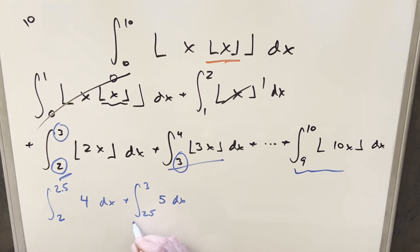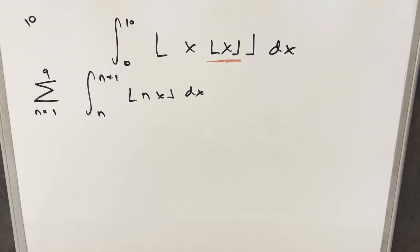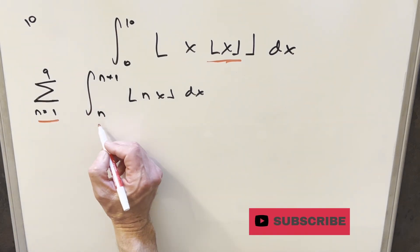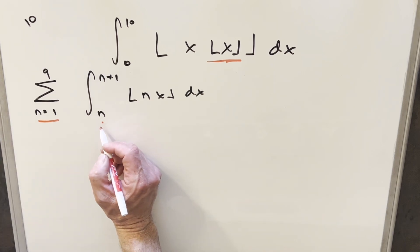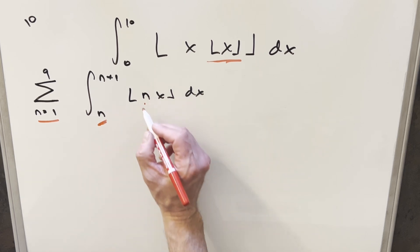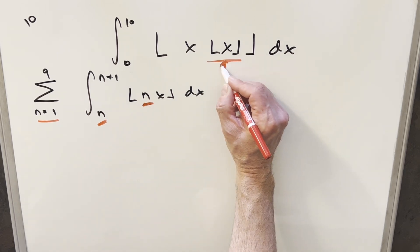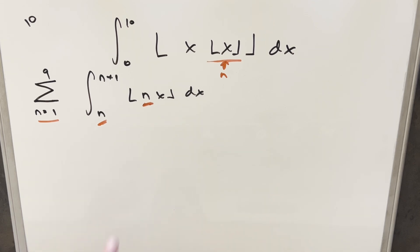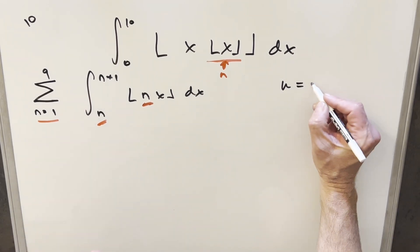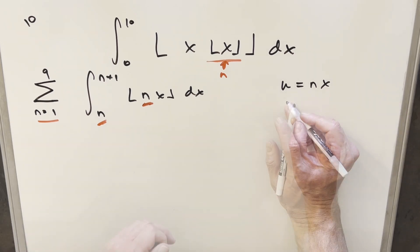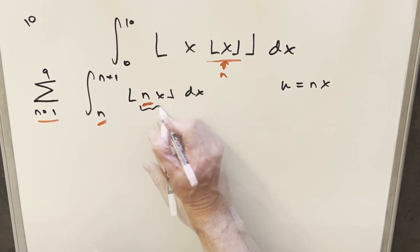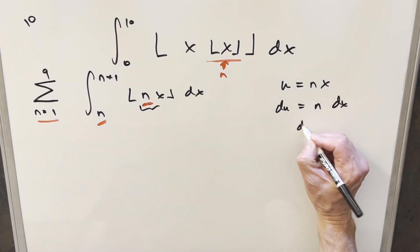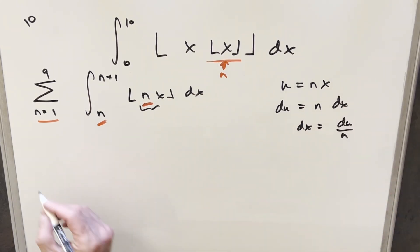Let me generalize. We start at n equals 1 since the n equals 0 integral was zero. Our lower bound is n and upper bound is n plus 1. Just focusing on this integral, I'll do a u-substitution: let u equal nx to simplify what's inside the floor function. Then du equals n dx, so dx equals du over n.